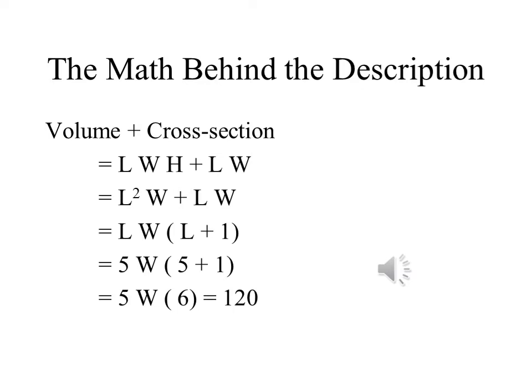Here you see the algebra that leads to this calculation. The volume and cross-section for this rectangular cistern is length times width times height, plus length times width. If the length and height are the same, it becomes length squared plus length times width. We can factor out length times width to get length times width times the sum of length plus 1. We can substitute length equals 5, and this simplifies to 5 times width times 6 equals 120. Dividing 120 by 30 gives us the width, which is 4. The calculation is a little quaint, but it shows how even the ancients were thinking about how to do more involved calculations.